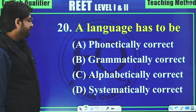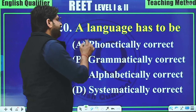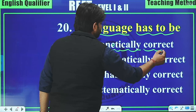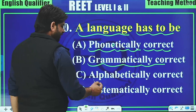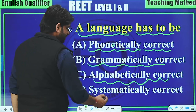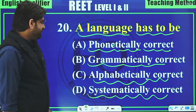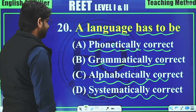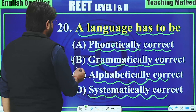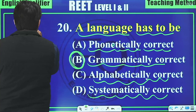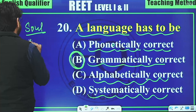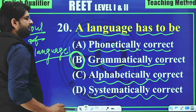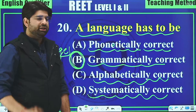Question 20: A language has to be — phonetically correct, grammatically correct, alphabetically correct, or systematically correct? Remember, grammar is the soul of a language, so language must be grammatically correct. That is the right answer.